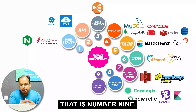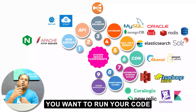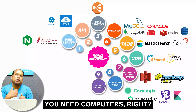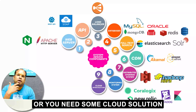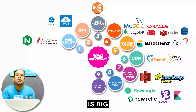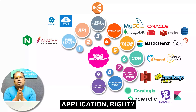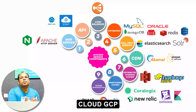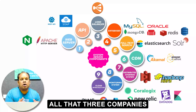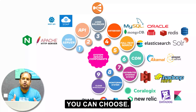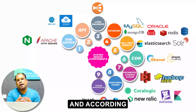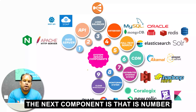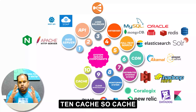Number nine: to run and execute your code, you need machines or computers, or a cloud solution if your application is large or enterprise-level. The options available are AWS, GCP, and Azure — all three are major giants, and you can choose based on affordability and convenience.